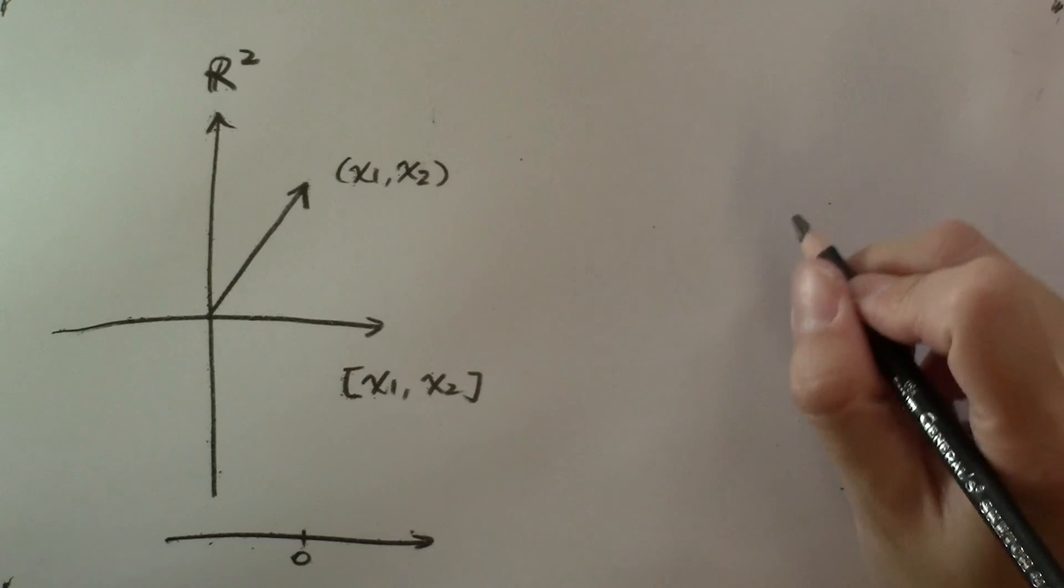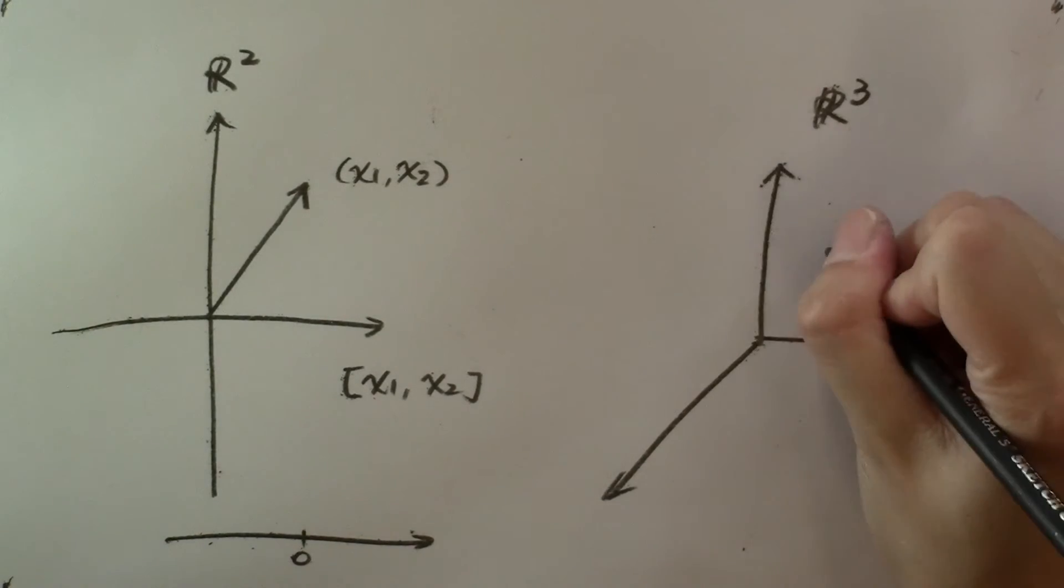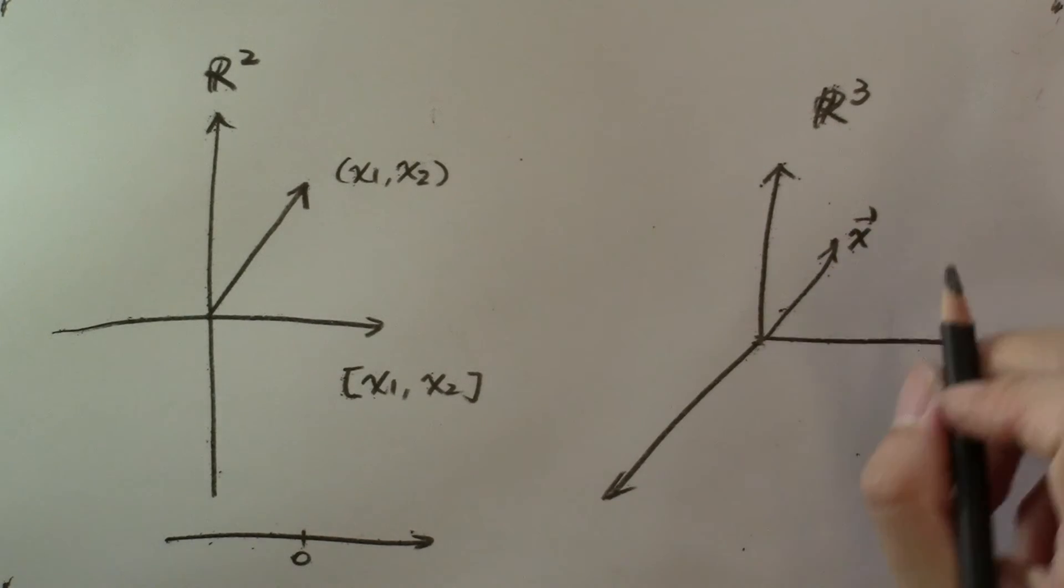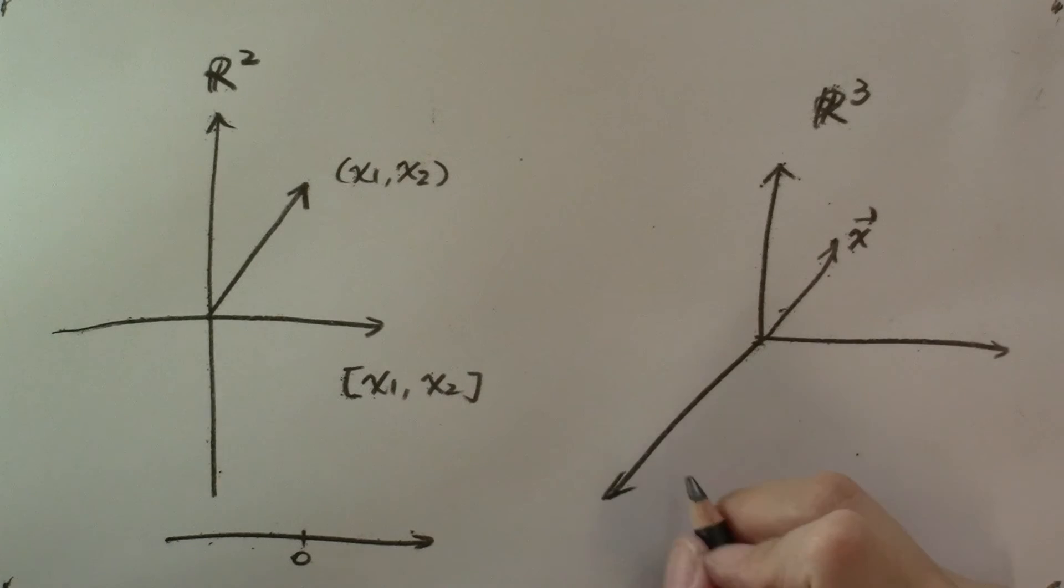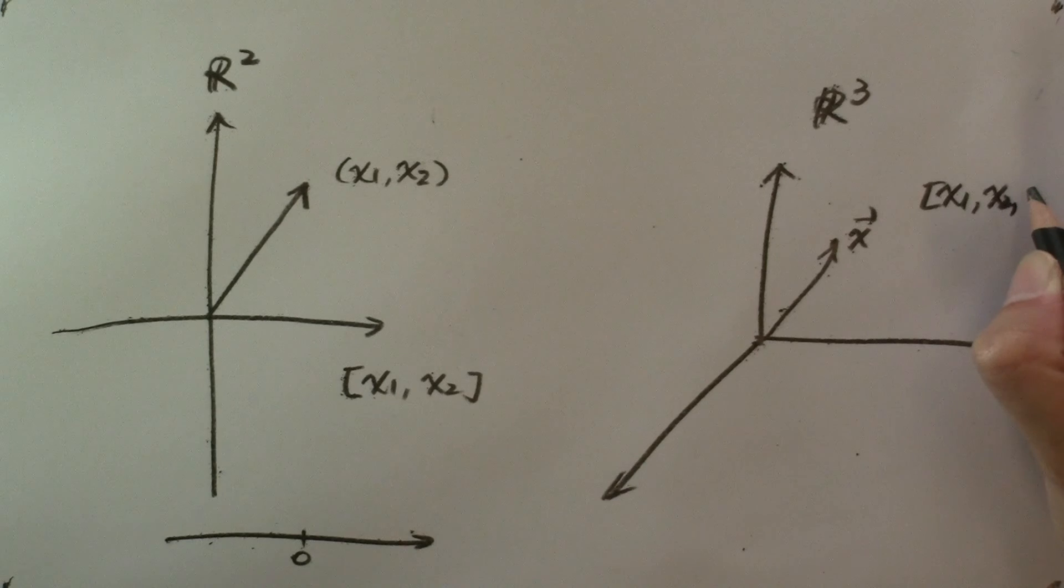the Euclidean space R3 is the three-dimensional space that we physically live in. Each vector x in R3 requires three entries: x sub 1, x sub 2, x sub 3.